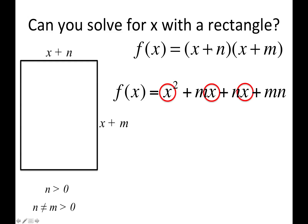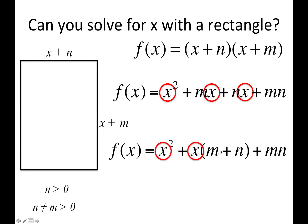If you expand this out, you get x² + mx + nx + mn, which simplifies to x² + (m + n)x + mn. But you have x in two different places — one with order two and one with order one — so you have to do a little manipulation to actually solve for x.